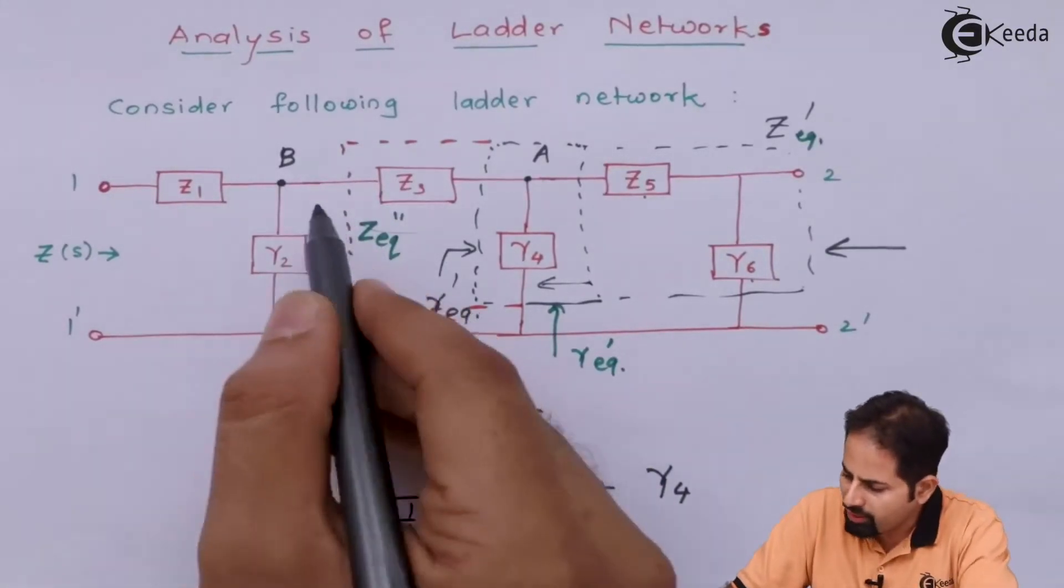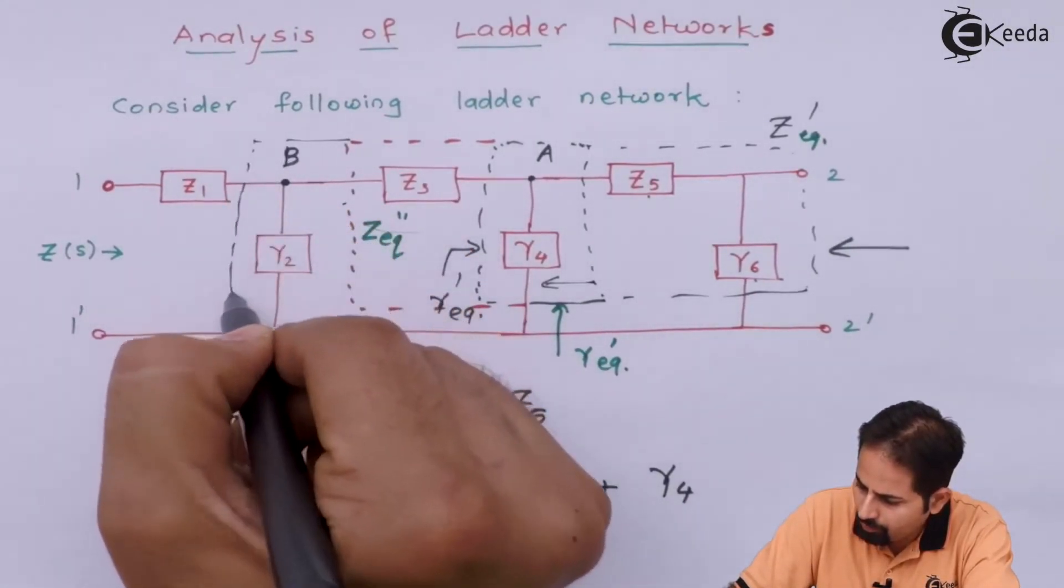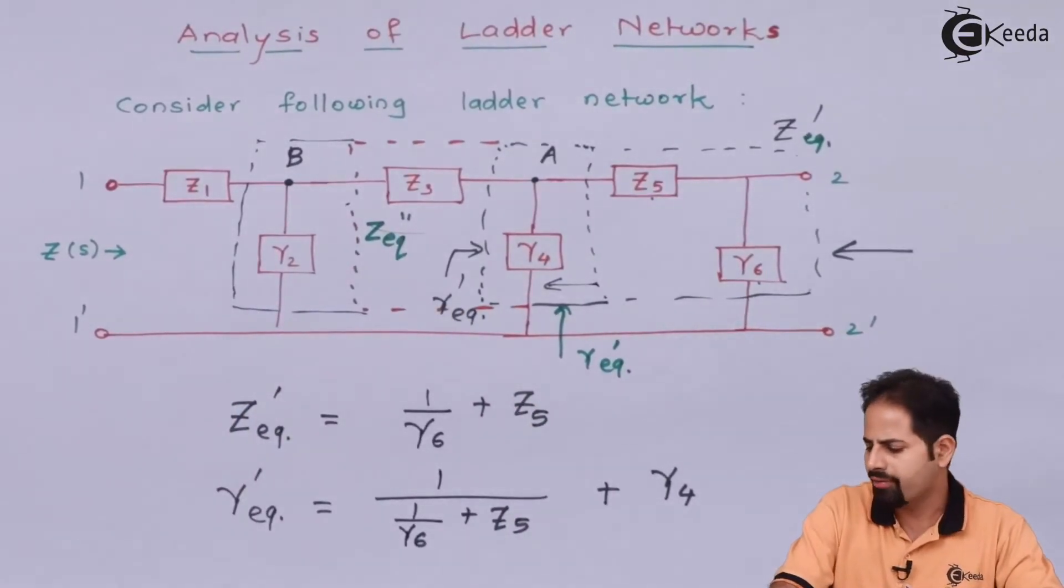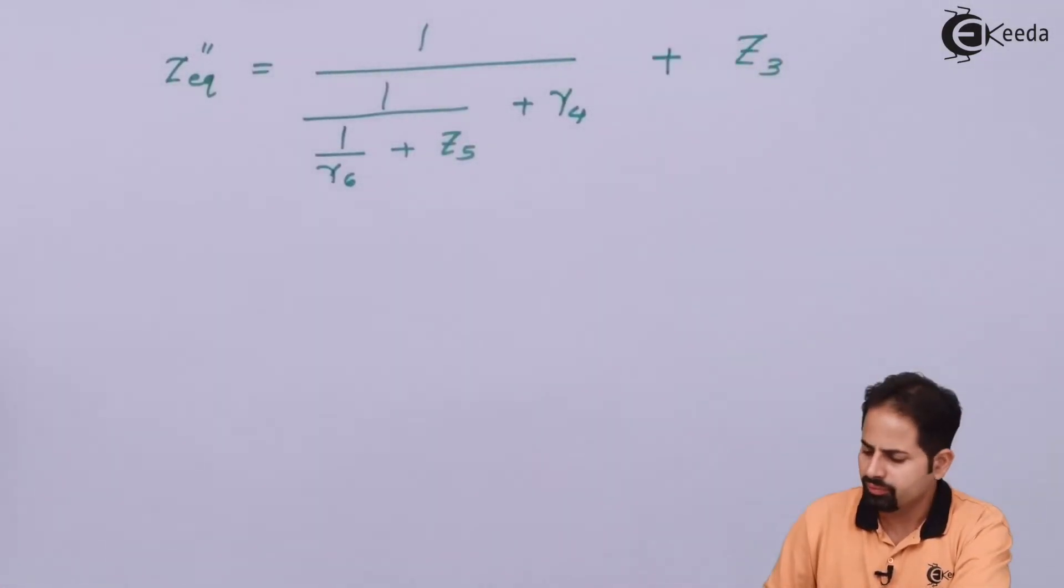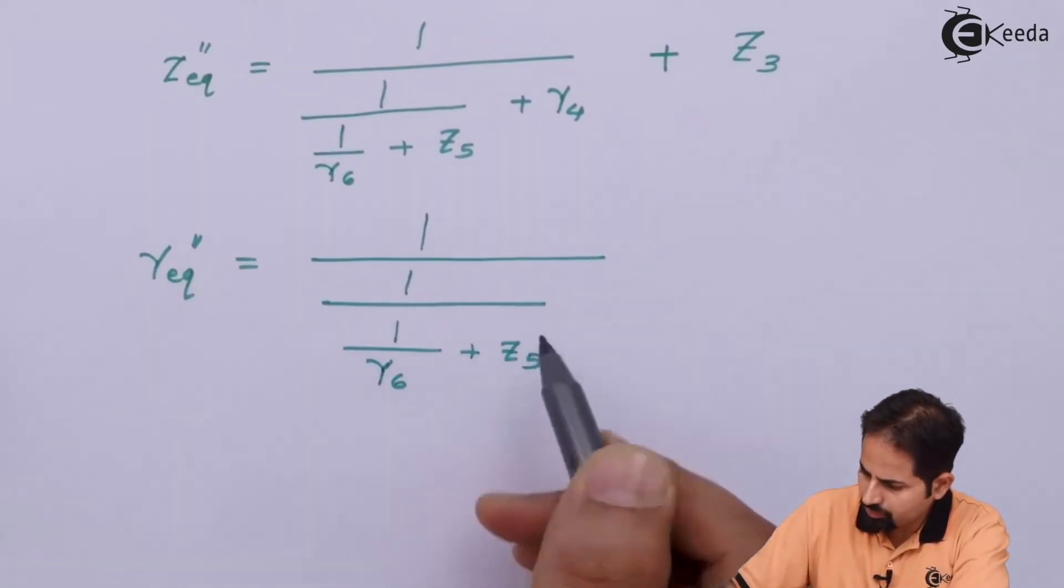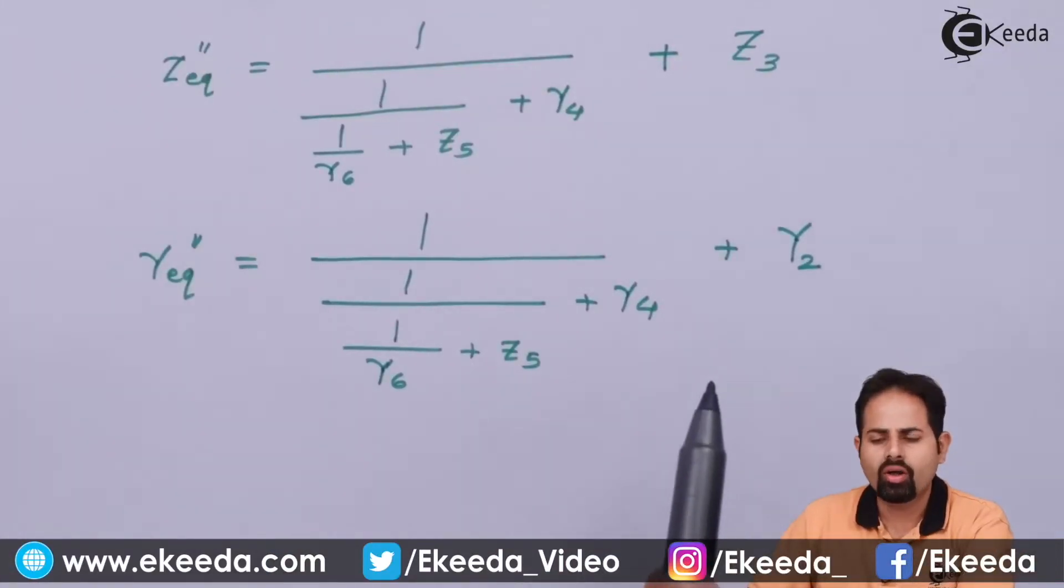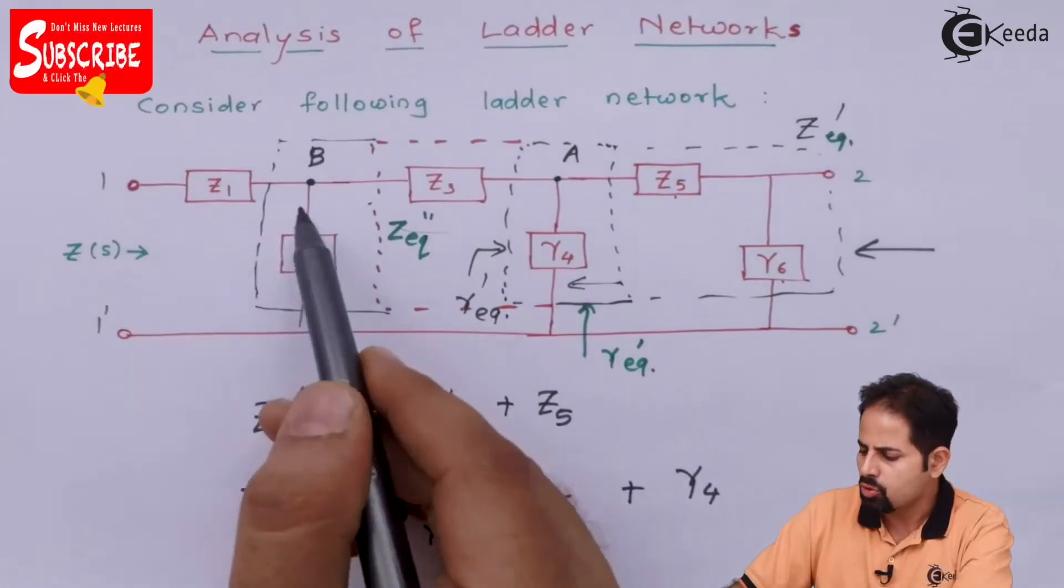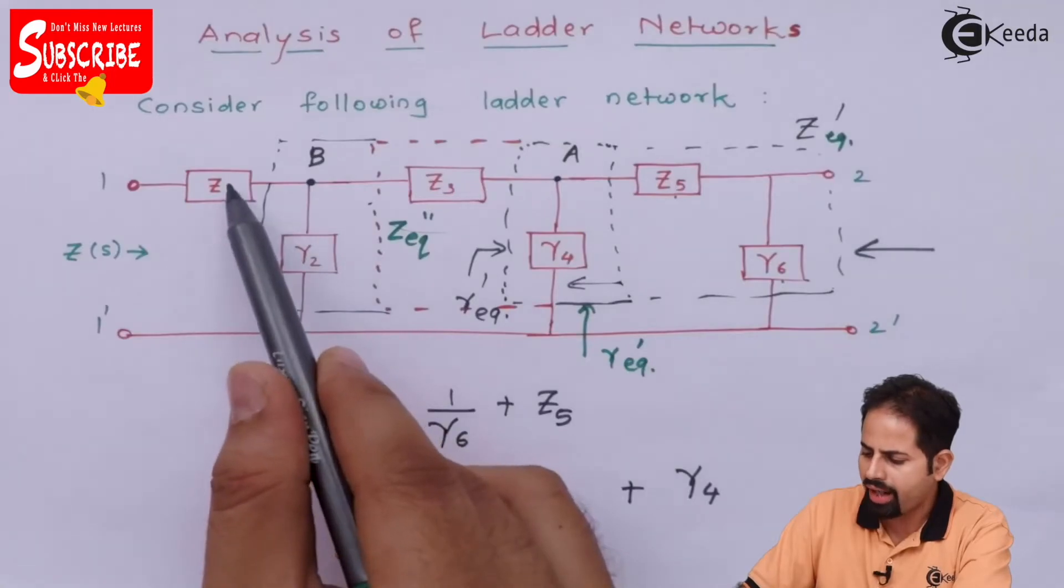Now when we want to include this Y2, suppose we want to include this Y2 also. So again we will take the inverse and we will add Y2 because it is admittance. So we will take inverse of this particular term and add Y2. So this is how I got Y equivalent double dash, but that is not my aim. Our aim is to include this Z1 also. So now I will reverse whatever I have got, I will take the inverse of it and I will add it with Z1.